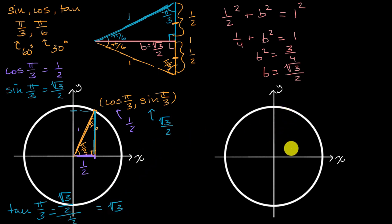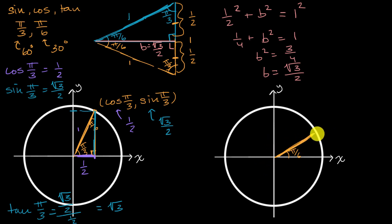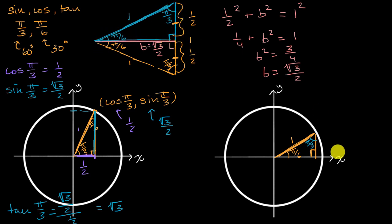Now let's use that same logic for pi over six. I encourage you to pause and try it yourself. Let's draw a radius forming a pi over six radian angle with the positive x-axis. We'll drop a perpendicular and see what triangle we've constructed. This has length one, this is pi over six radians, and this is a right angle. The remaining angle is pi over three radians, following the same pattern. So this side has length one half.